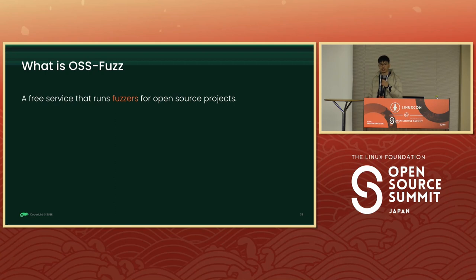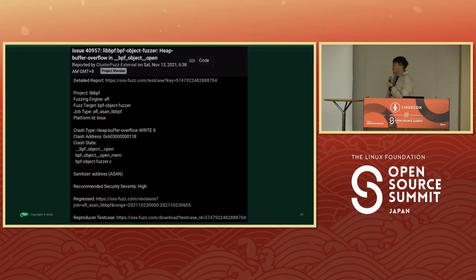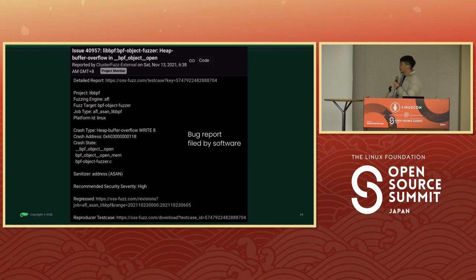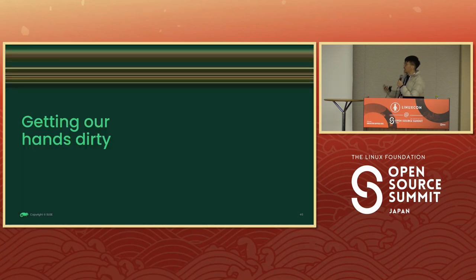Knowing how a fuzzer works and knowing what a fuzzer is, we can look back at OSS-Fuzz. It's a free service that runs fuzzers — in other words, a free service that tries to find bugs in open source software, focused more on the security issues. So back to this OSS-Fuzz report. I know now that this is a bug report filed by software. Unlike a usual bug report filed by a user, where you can interact with them and ask for more input, we don't get that benefit here. But that said, OSS-Fuzz actually provides us with a lot of helpful tools to debug this issue.